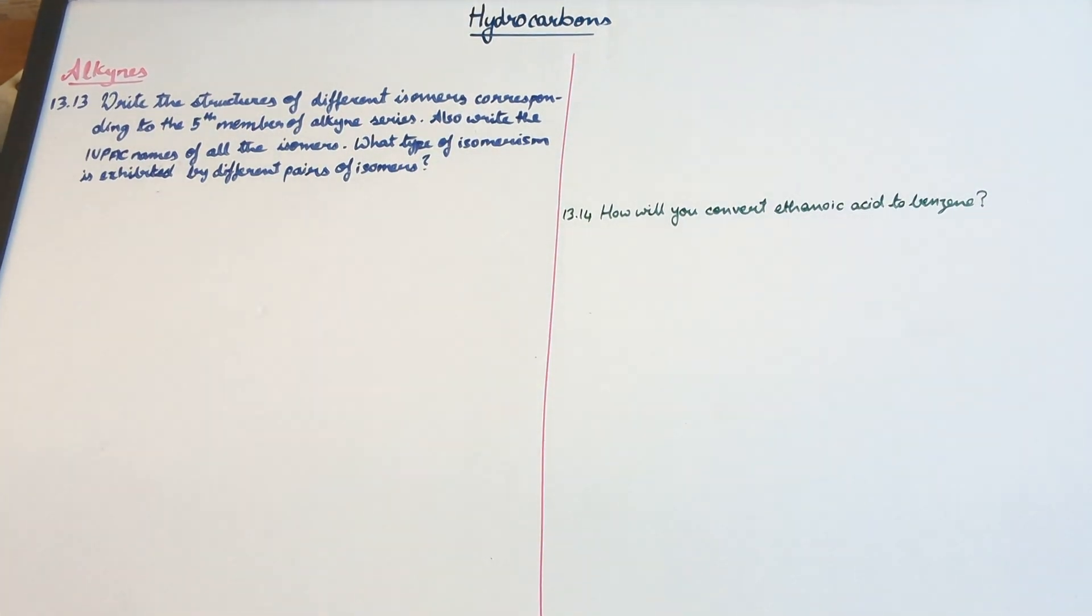In this video we are discussing the intext questions related to alkynes. The first one is write the structures of different isomers corresponding to the fifth member of the alkyne series. Also write the IUPAC names of all the isomers. What type of isomerism is exhibited by different pairs of isomers?